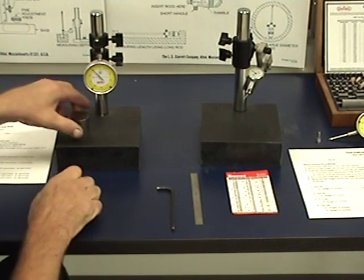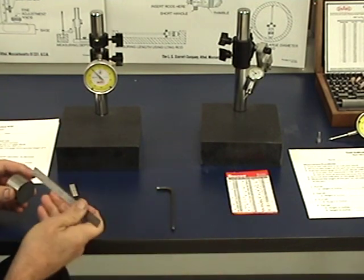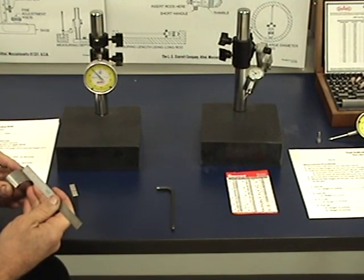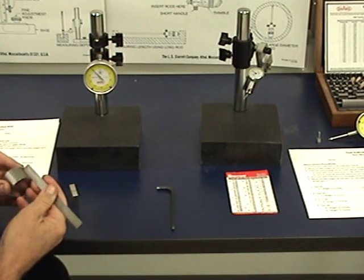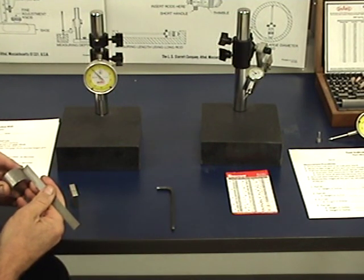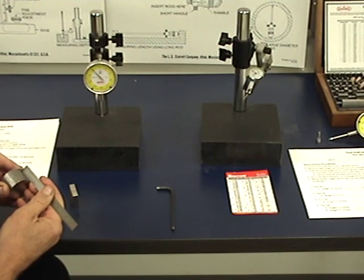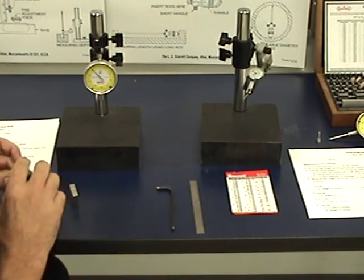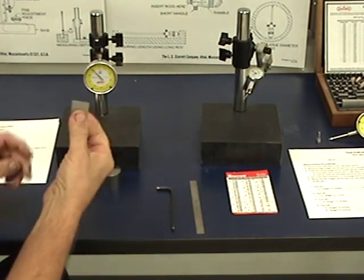The way the instructions say, you take your part, you measure your part with a steel rule, and say if my part is a little over one inch, it's about an inch and three thirty-seconds, something like that. I'm going to use a one inch gauge block.